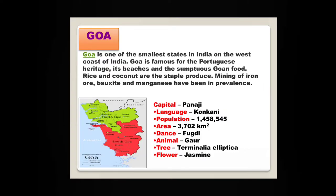Goa is one of the smallest states in India, on the west coast. Goa is famous for the Portuguese heritage, its beaches, and the most delicious Goan food. Rice and coconut are the staple produce. Mining of iron ore, bauxite and manganese has been prevalent. The capital of Goa is Panaji. The animal most commonly found in Goa is the gaur, which is a kind of deer.